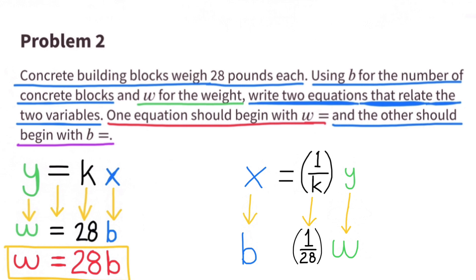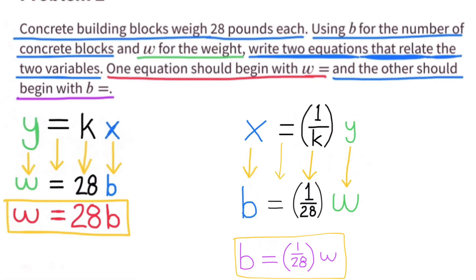And the k, or the constant, would be the 28, representing the 28 pounds each block weighs. So the second equation would be b equals 1 over 28 times w, or b equals 1 divided by 28 times w.